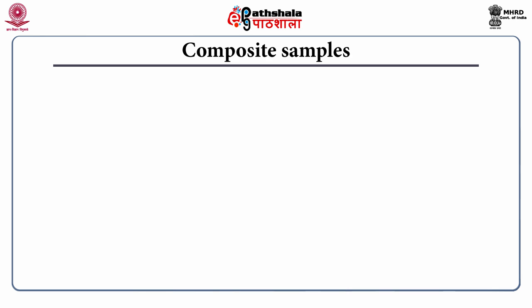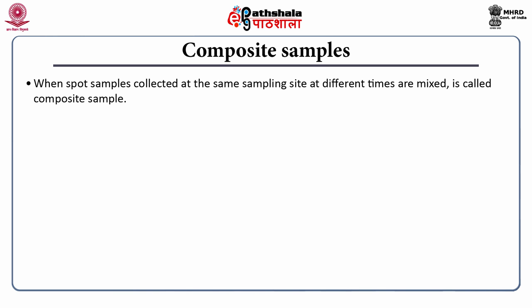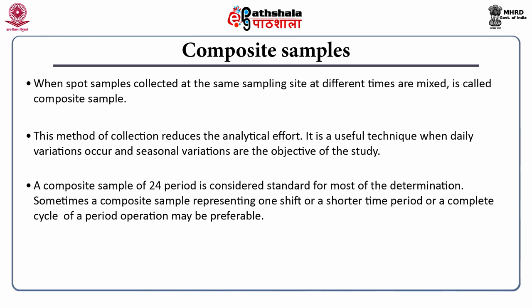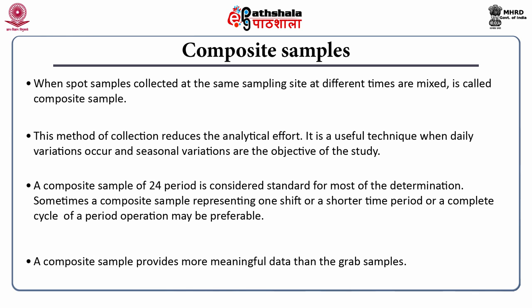A composite sample is formed when spot samples collected at the same sampling site at different times are mixed together. This method reduces analytical effort and is useful when daily or seasonal variations are the objective of study. A composite sample of a 24-hour period is considered standard for most determinations. Sometimes a composite sample representing one shift, a shorter time period, or a complete cycle of a periodic operation may also be preferable.